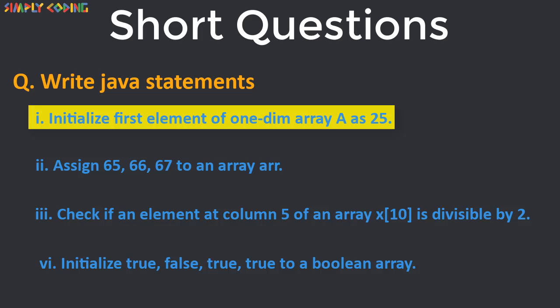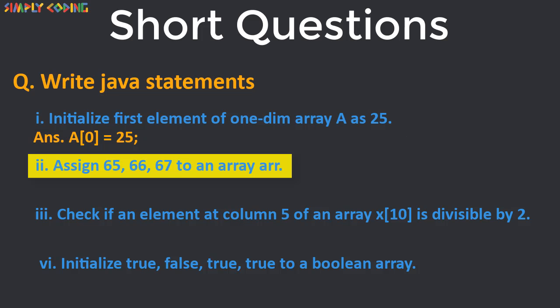Here in first one you just need to initialize the first element. You do not need to declare array as that is not asked. So we will just write a index 0 is equal to 25. Next we will create a static array ARR and initialize its value to 65, 66 and 67 in curly braces.